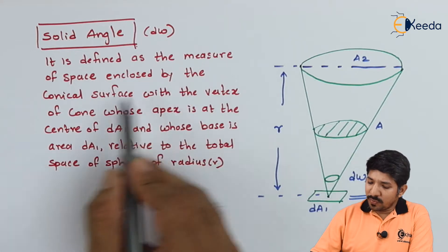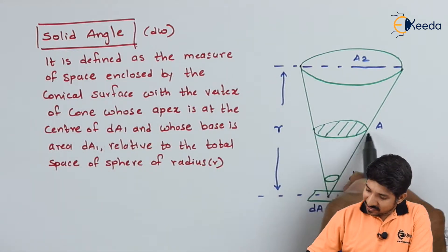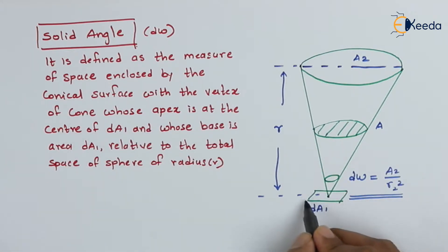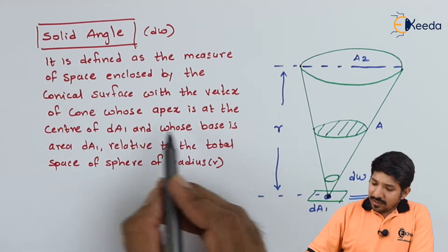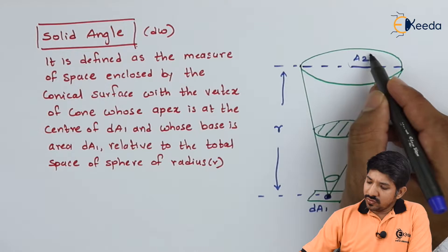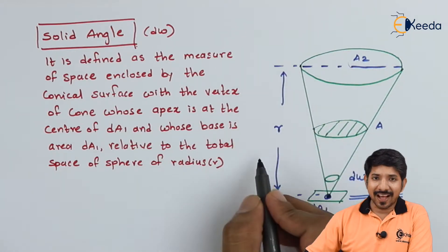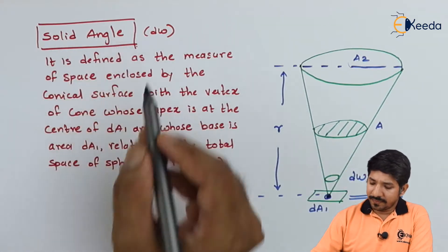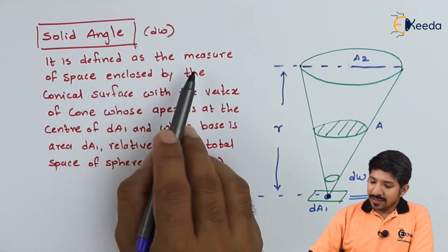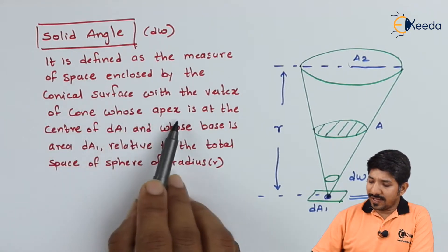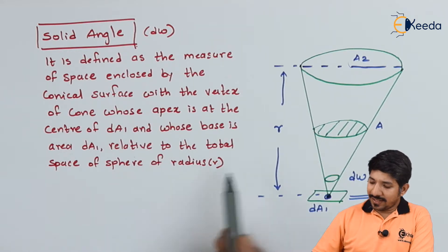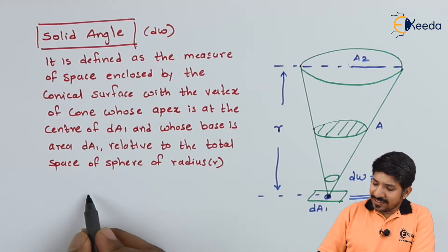Solid angle is defined as a measure of space enclosed by a conical surface, with the vertex of the cone whose apex is at the center of dA. Consider a surface with a small elemental area called dA1. The area A2 is the area at the end of radius r. This region subtended by the cone is called the solid angle — it is a measure of space enclosed by the conical surface whose base is area dA1 relative to the total space of a sphere of radius r.